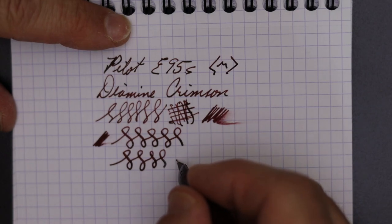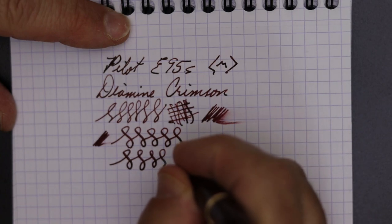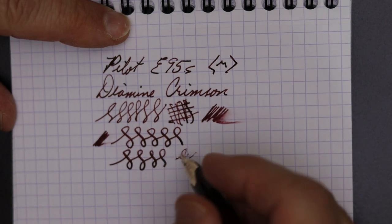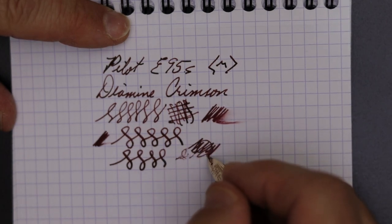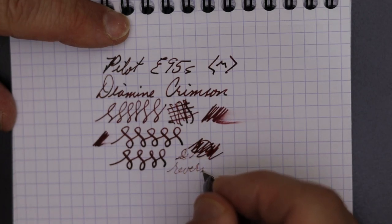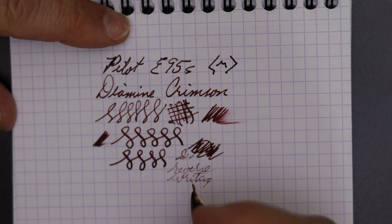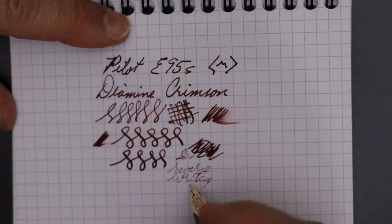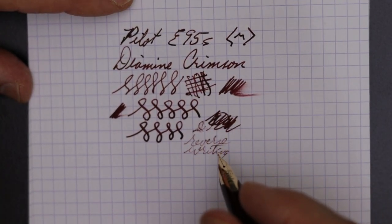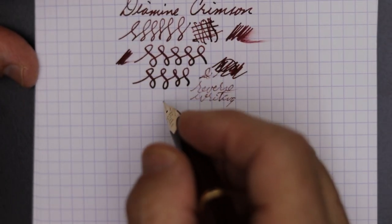How about reverse writing? Not so good. Let's see, if I increase the angle. All right, this pen does not, let me try to get some ink flowing there. Let's see what happens with that. Yeah. No, it's scratchy, and it just does not do it for reverse writing. So for those of you who've got to have a reverse writer, it won't do it.